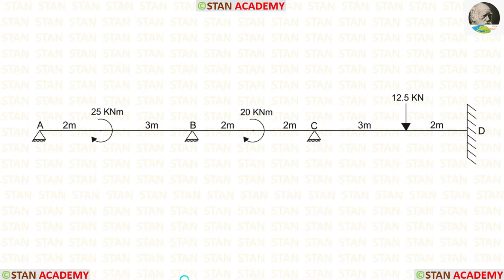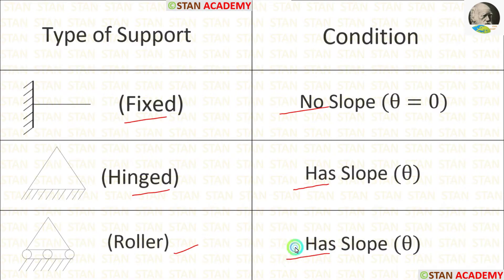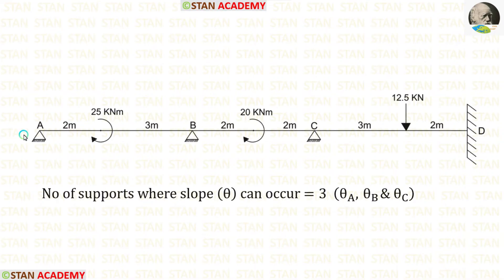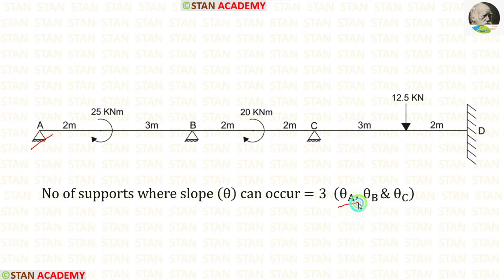In the slope deflection method, we need to identify the supports where slope can occur. In a fixed support, there will be no slope. In hinged and roller supports, there will be slope. In this beam, points A, B, and C have hinged supports, so slope can occur at 3 supports: theta A at A, theta B at B, and theta C at C.